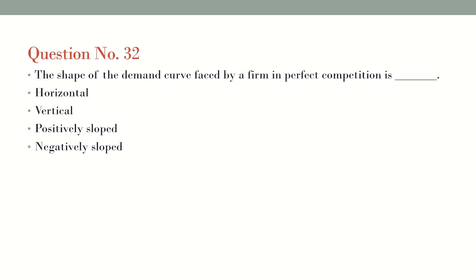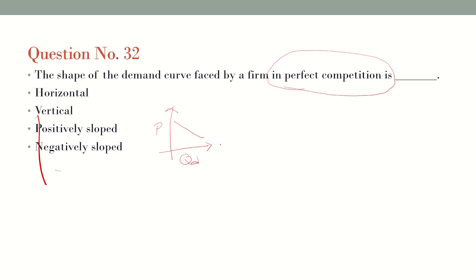Question number 32: What is the shape of the demand curve faced by a firm in perfect competition? When we take the demand curve, we consider the x-axis for quantity demanded and the y-axis for price. The demand curve is generally negatively sloped, but in the perfect competition market the shape of the demand curve is generally horizontal.